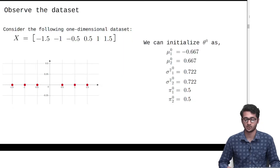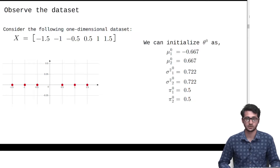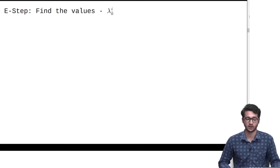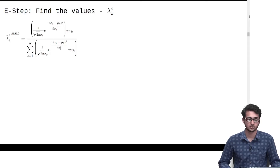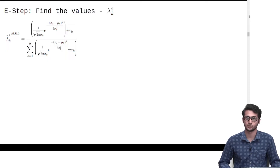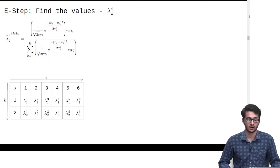Now that we have this, our next step is to find the values of lambda. This is the closed form expression we get for lambda, when we treat the parameters mu, sigma squared, and pi as constant, and we want to fill this table.